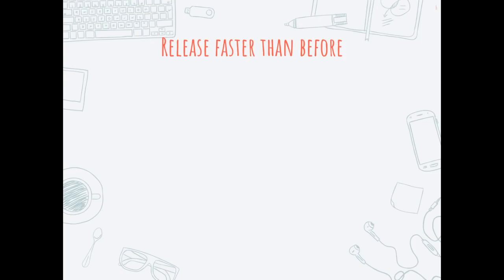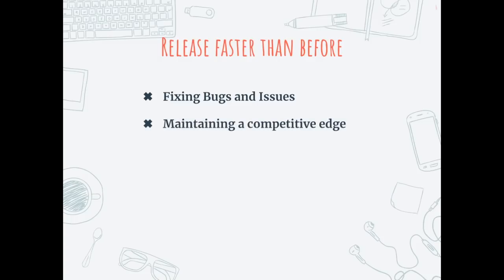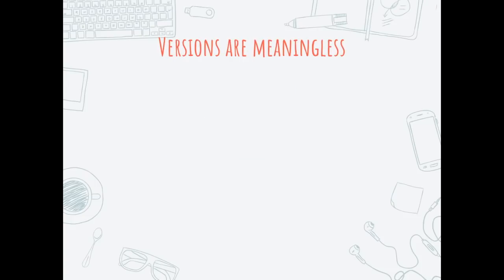Why do we release things faster? We release faster to fix bugs, introduce new features to maintain our competitive edge, and to remove security vulnerabilities whenever new vulnerabilities are introduced in the system, so we have secure code running in production. These are some of the reasons why we release software faster into production. However, the moment we release things faster, versions become messier and more meaningless.